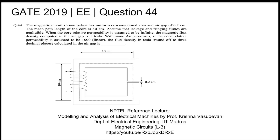This is GATE 2019 electrical question number 42. It says the magnetic circuit shown has a uniform cross-sectional area and an air gap of 0.2 centimeter. The mean path length of the core is 40 centimeter (10+10+10+10). Assume leakage and fringing flux are not there, so we will consider only the direct flux paths.